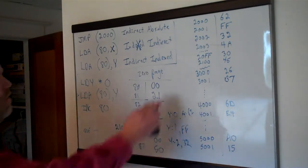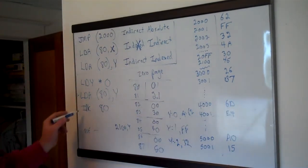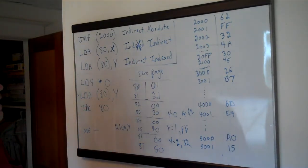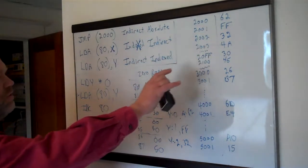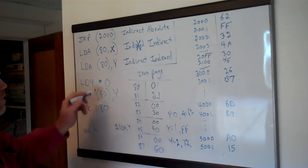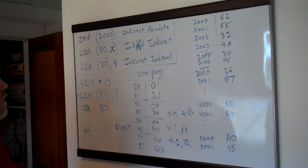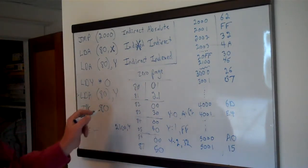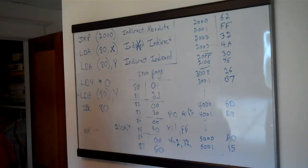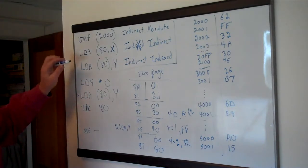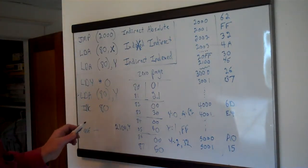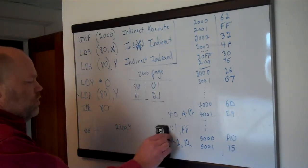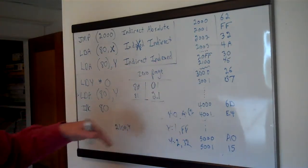The point is: if you already knew what location you needed before the program started, you wouldn't need to do the indirect part — you'd just put the address in there. But anytime your program doesn't know until runtime what address it needs to work on — like if your worm is moving around and you need to keep changing your pointer to that location — that's when you use this, because you can't hard-code where it'll be. In the worm program we have two zero page locations: one pointing to the head and one to the tail of the worm.